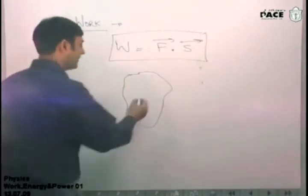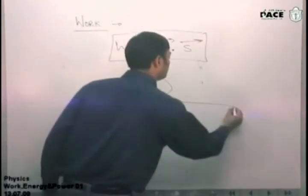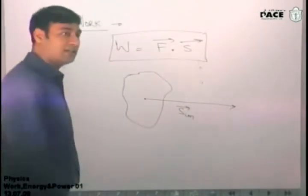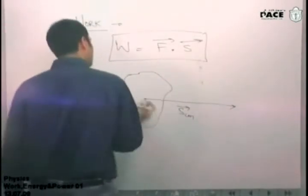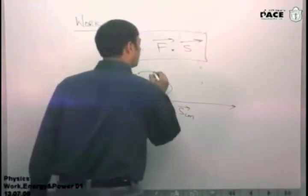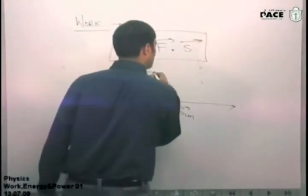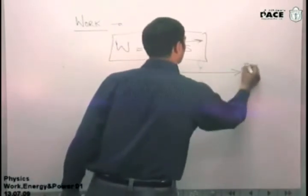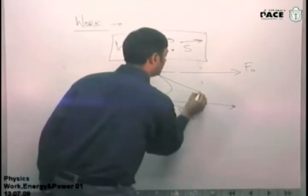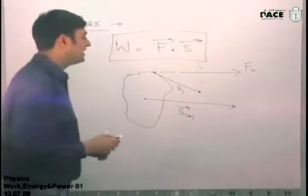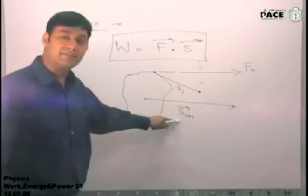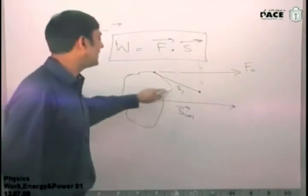This is some rigid body. This body has moved from here to here. Displacement of the center of mass is SCM. This body is also rotating. And finally, I was applying a force on it. Constant force on it. And this force was always acting in this direction, F0. And this point actually displaced from here to here.